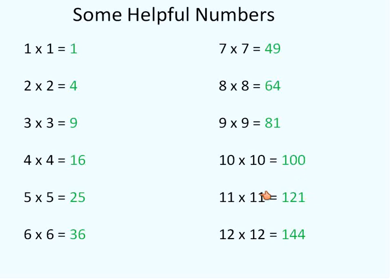So, for example, the square root of 121 is 11. In other words, 11 times 11 is 121. So, these are a list of numbers that you should memorize.